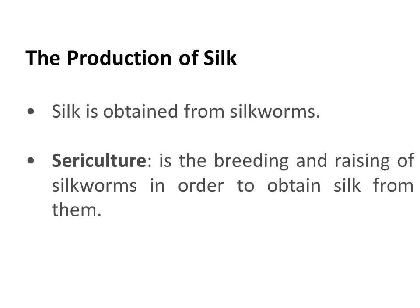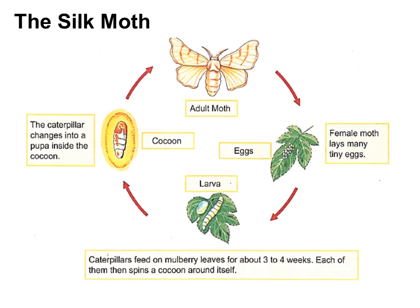In this image, the life cycle of a silk moth is given. A moth is nothing but the adult version of a silkworm. The first step: the female moth lays many tiny eggs. After that, caterpillars feed on mulberry leaves for about 3 to 4 weeks, and each of them then spins a cocoon around itself. The caterpillar then changes into a pupa inside the cocoon, and finally the pupa becomes an adult moth — and this cycle continues. This type of diagram is called a life cycle diagram.